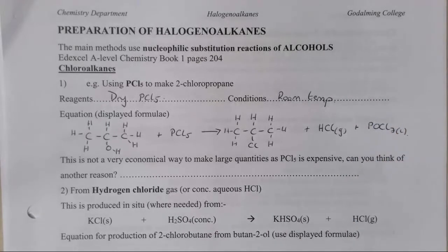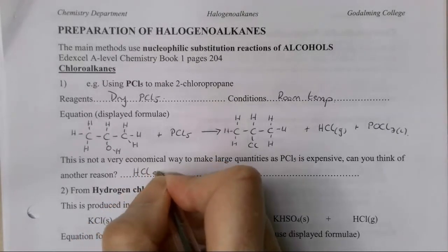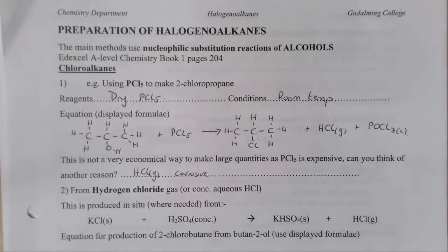You also get some POCl3 and that's a liquid. It's not a very economical way of making the chloroalkane because the PCl5 is expensive. The other reason is that HCl gas is produced, which is corrosive. It burns on contact.